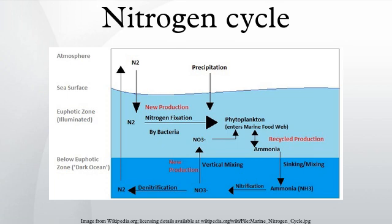When a plant or animal dies or an animal expels waste, the initial form of nitrogen is organic. Bacteria or fungi convert the organic nitrogen within the remains back into ammonium, a process called ammonification or mineralization.